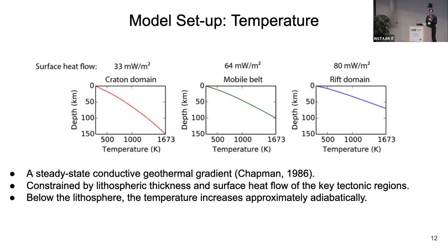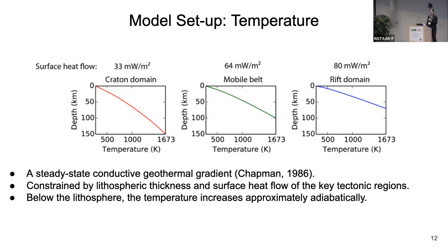For the temperature condition, we used a steady-state conductive geotherm from the surface down to the base of the lithosphere. We constrained lithospheric thickness and surface heat flow for key tectonic regions: the cratonic domain, mobile belts, and the rift domain. These show temperature profiles versus depth for three different domains. Below the lithosphere, temperature increases adiabatically.